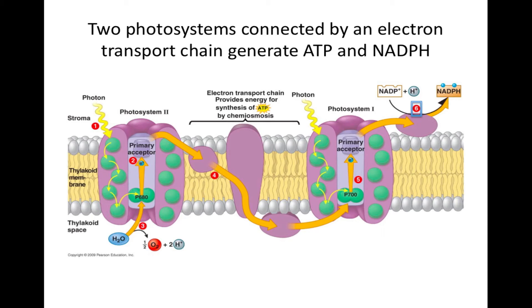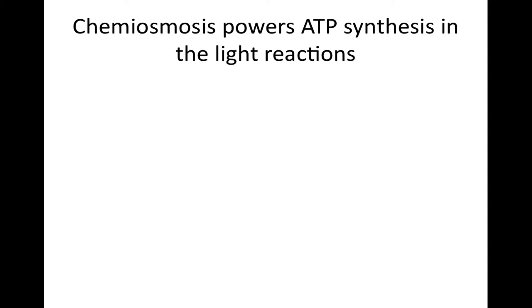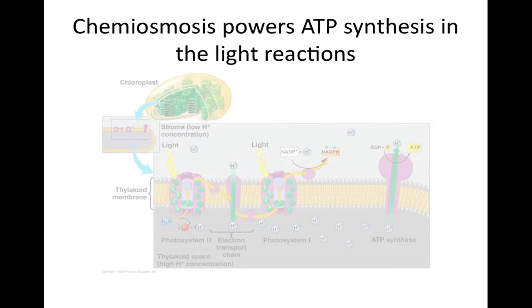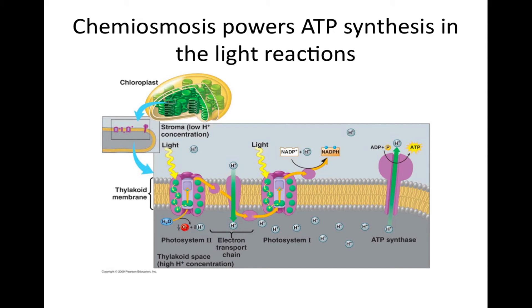NADPH, ATP, and O2 are the products of the light reactions. Chemiosmosis powers ATP synthesis in the light reactions. Chemiosmosis is also the mechanism that generates ATP in a chloroplast. Recall that chemiosmosis drives ATP synthesis using the potential energy of a concentration gradient of hydrogen ions across a membrane. The gradient is created when an electron transport chain uses the energy released as it passes electrons down the chain to pump hydrogen ions across a membrane. During the electron transport chain, hydrogen ions are pumped across the membrane from the stroma into the thylakoid space, generating the concentration gradient. In photosynthesis, this chemiosmosis production of ATP is called photophosphorylation because the initial energy input is light energy.